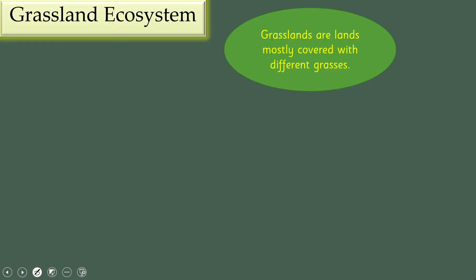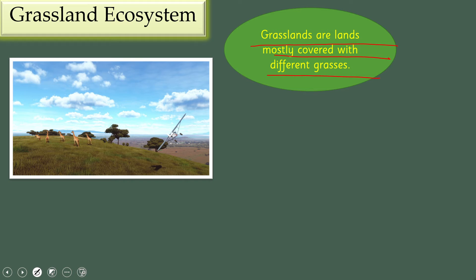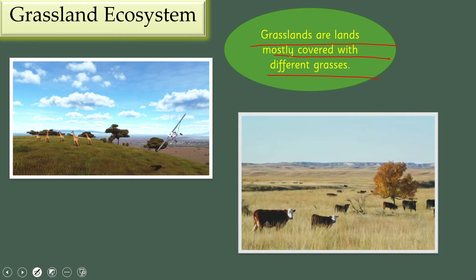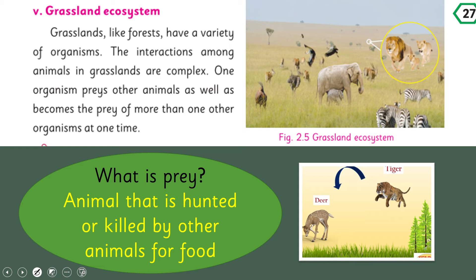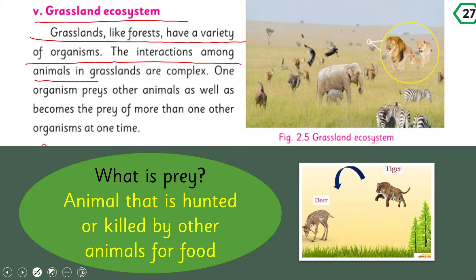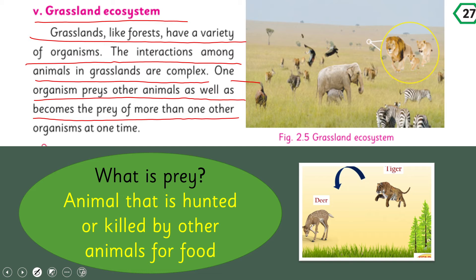Now, grasslands. Grasslands are lands mostly covered with different grasses. Open the grassland ecosystem section. Grasslands, like forests, have a variety of organisms. The interactions among animals in grasslands are complex — one organism feeds on other animals and also becomes the prey of more than one other organism at the same time.